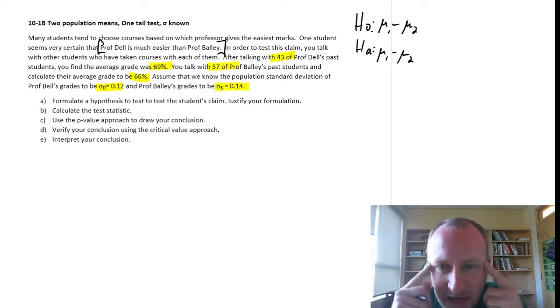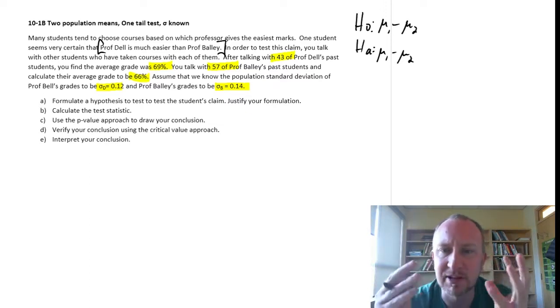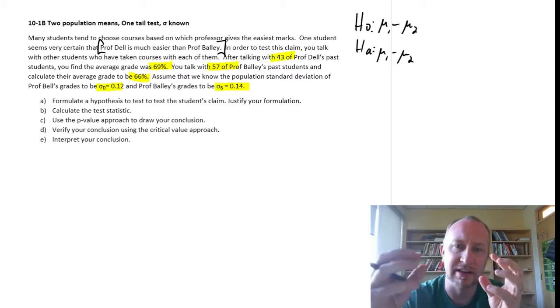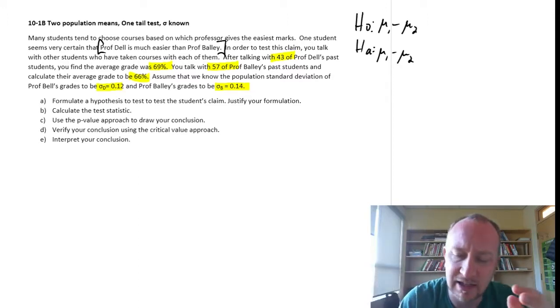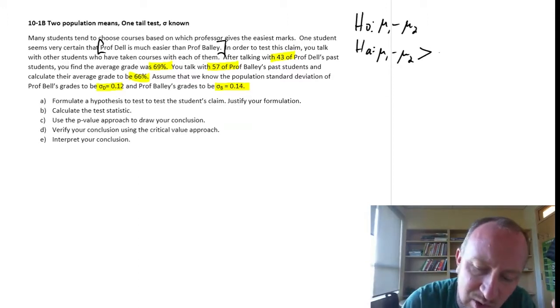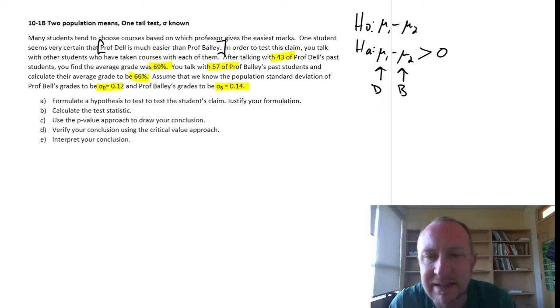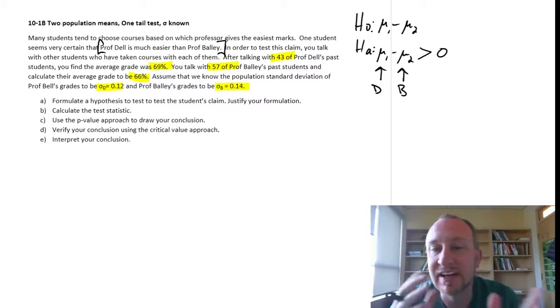So in my mind that sounds like an upper tail test because I'm testing that this is greater than this. But only if I defined this as Professor Dell and this as Professor Bailey. If I were to define these the other way then that would become a lower tail test.